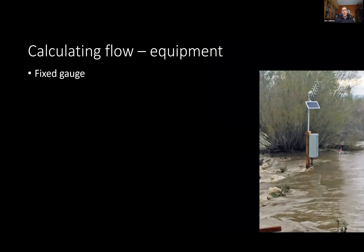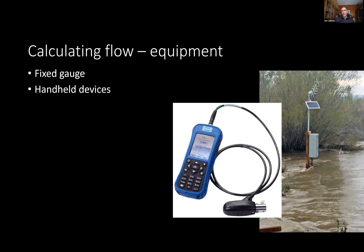There are different ways to measure and calculate streamflow. One is a fixed gauge, which might use a continuous data logger or remote monitor. You calibrate the gauge so that a certain reading corresponds to a known number of cubic feet per second. You can also use handheld instruments for instantaneous readings, though those still require calibration. The technique we use is simple and doesn't require expensive equipment.